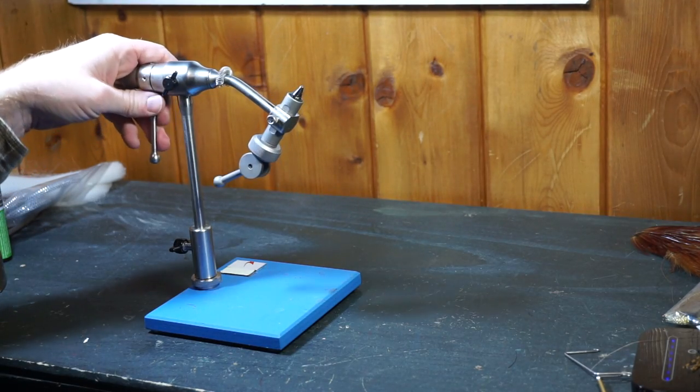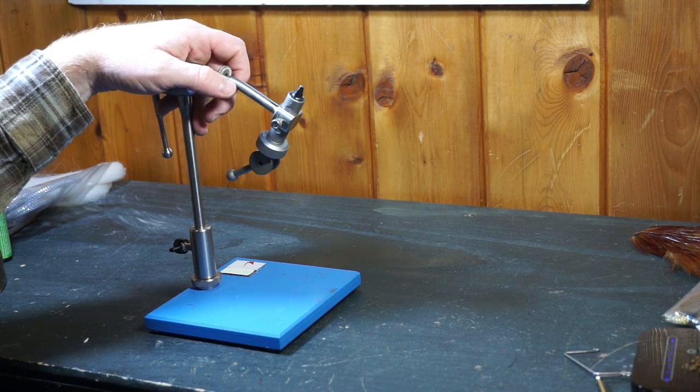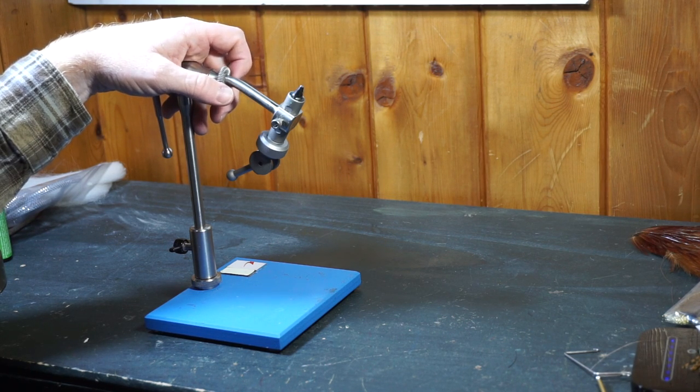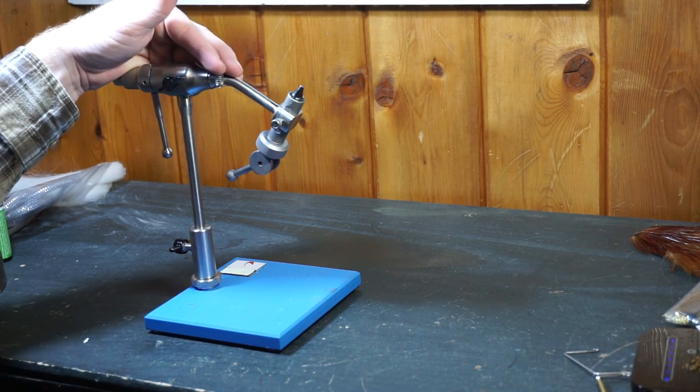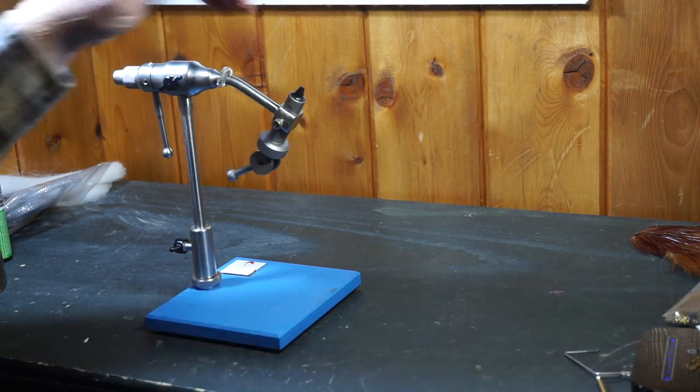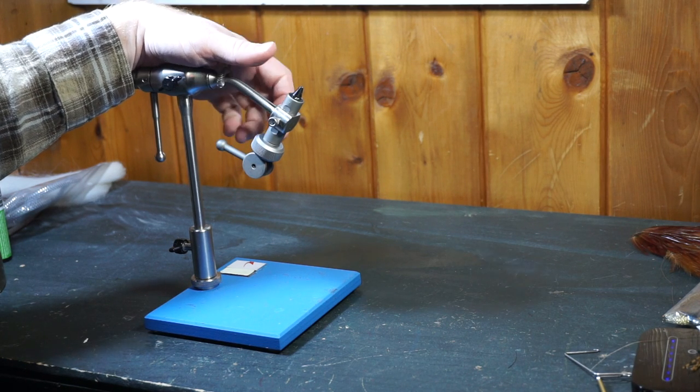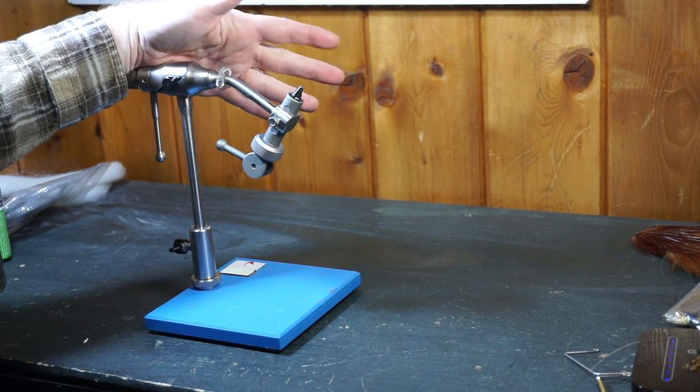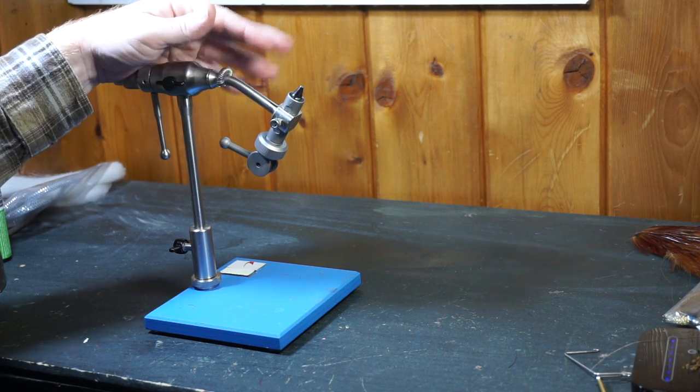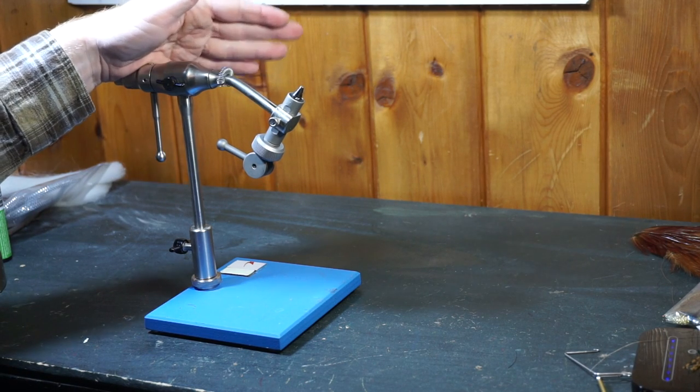However, I still would rather have maybe, you know, a Renzetti, or a Dynaking, or, you know, some of these higher-end vices. But for a full rotary on a Dynaking, you're going to be spending, I think the cheapest is $275. But it's good. It's better. But it's a lot. It's more than, it's about double the price. If you just don't want to go $200 plus, this is what it would be, I think, the best vice out there for the $150 range.